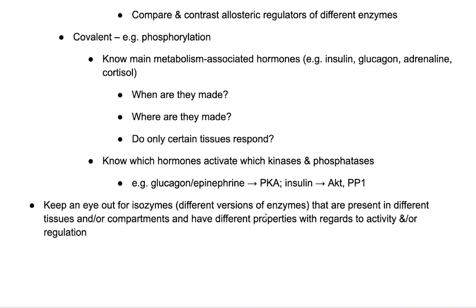The hormonal response is typically through the activation of kinases and phosphatases. Know which hormones activate what — glucagon and epinephrine are going to activate PKA, whereas insulin is going to activate AKT and protein phosphatase. One of the ways both your liver and muscles can respond to the same stimulus but have different responses is because they have isozymes — different versions of enzymes present in different tissues or compartments, with different properties regarding their activity or regulation.